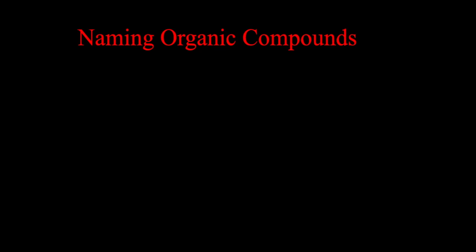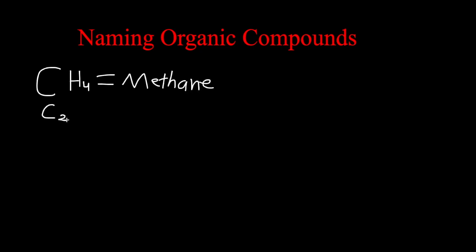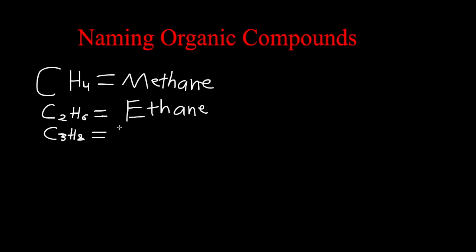The first thing we want to know is the names for all of them. If we have one carbon and four hydrogens, this would be called methane. If we have two carbons, we would have a total of six hydrogens — this would be called ethane. If we have three carbons, we would have eight hydrogens, and this would be called propane.